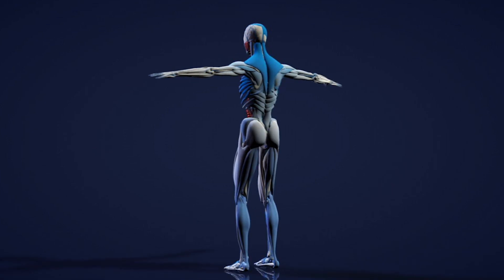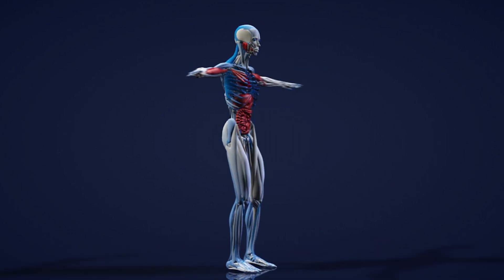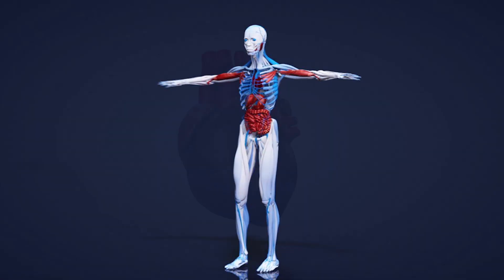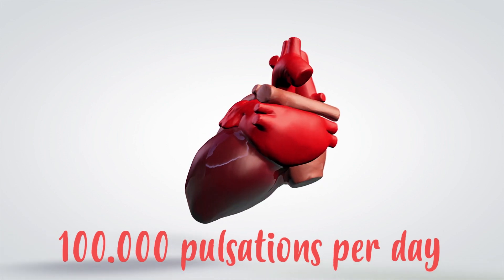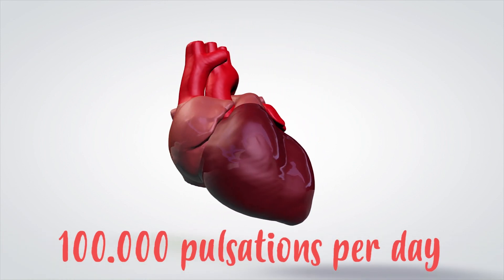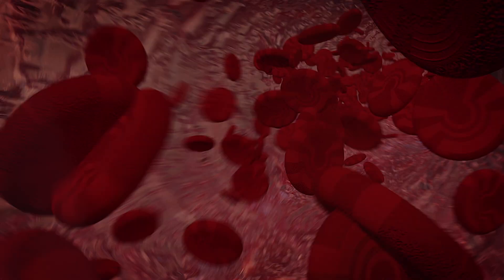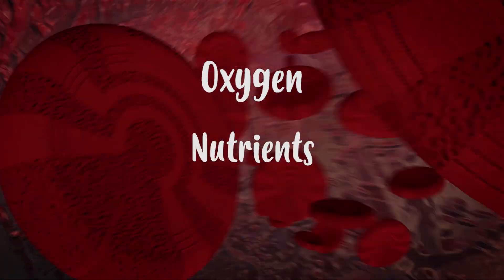The heart has the main role in making sure that the blood travels around the body. With its 100,000 pulsations per day, it ensures that blood circulates throughout our body, allowing it to distribute oxygen and nutrients into our cells.